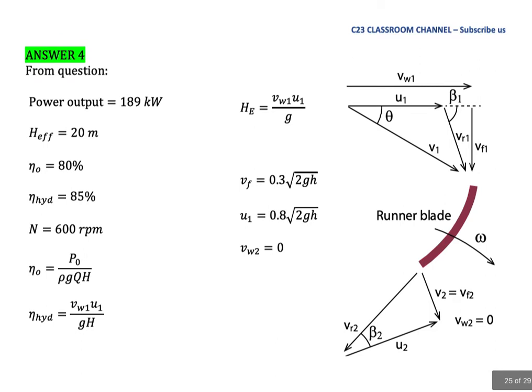From the question, what you need to do first is draw the velocity triangle, and this is the velocity triangle. I hope you know how to draw the velocity triangle for Francis turbine. We list all the parameters that we get from the question.